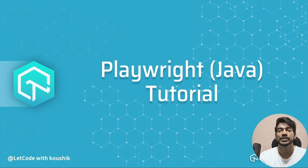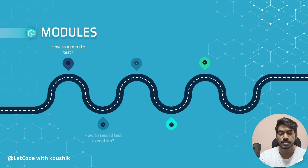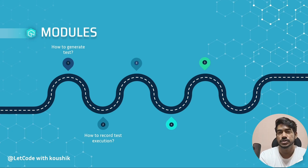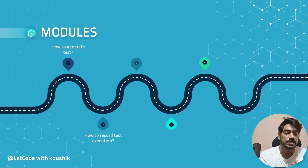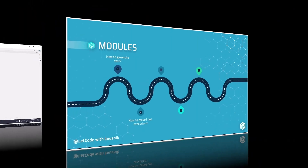Hello guys, my name is Kaushik and welcome back to LambdaTest. In this video we are going to learn how to generate tests with the help of Playwright codegen, and then we are going to learn how to save the test execution as a video format. In test automation, mostly we rely on test reports with screenshots, but we can also see the flow of test execution as a video format very easily with Playwright.